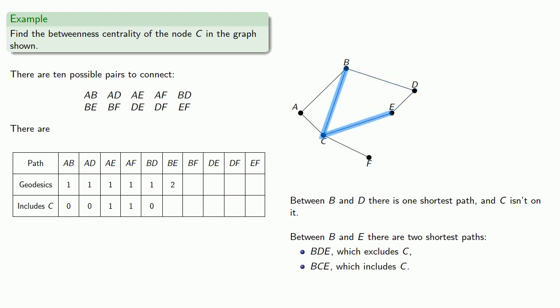So that adds two shortest paths and adds one to shortest paths that C is on. And between B and F, there's one shortest path, and that one includes C.